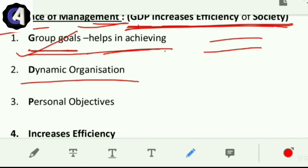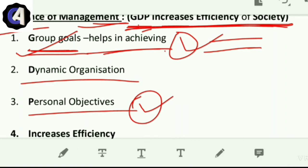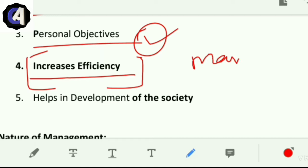D means dynamic organization. It creates a dynamic organization which can adapt itself to the changing environment. P means personal objectives - group objectives are being fulfilled and people's personal objectives are being fulfilled. I means increases efficiency. It increases the efficiency of the workforce. If there's no manager to watch the workers, how will workers work? Their efficiency will be very poor because they are not concerned about wastage. They might be effective but they won't be efficient.